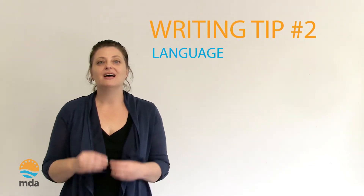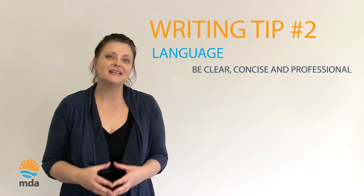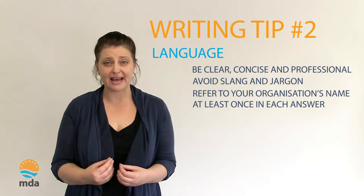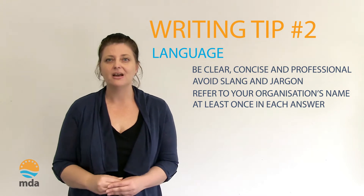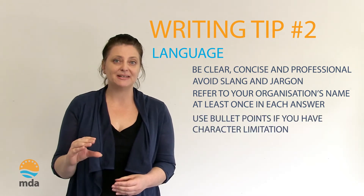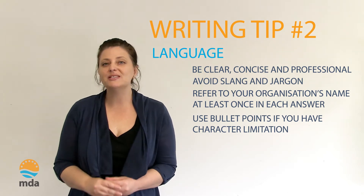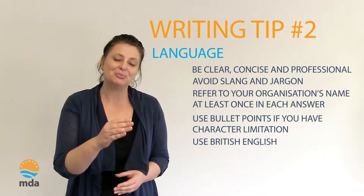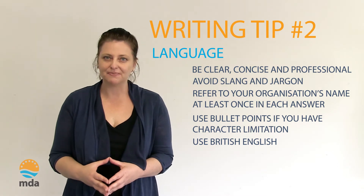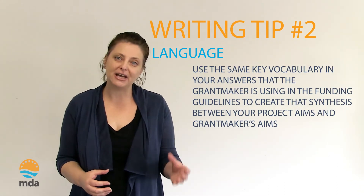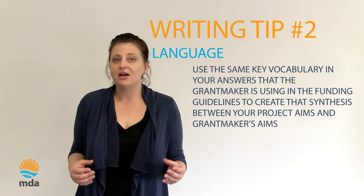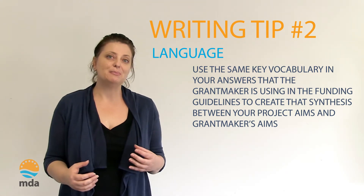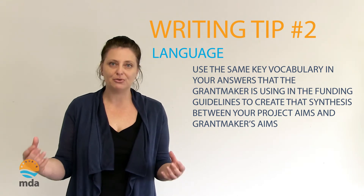Writing tip number two: language. Be clear, concise, and professional. Avoid slang and jargon. Refer to your organization's name at least once in each answer. If you're up against character limitations in your answer box, then use bullet points. Use British English, not American English — jump into the language preferences section of your system and ensure that British English is selected as the default. Make sure you're using the same key vocabulary and phrases in your answers that the grant maker is using in their funding guidelines, to create that synthesis between the aims of your project and the aims of the grant maker.